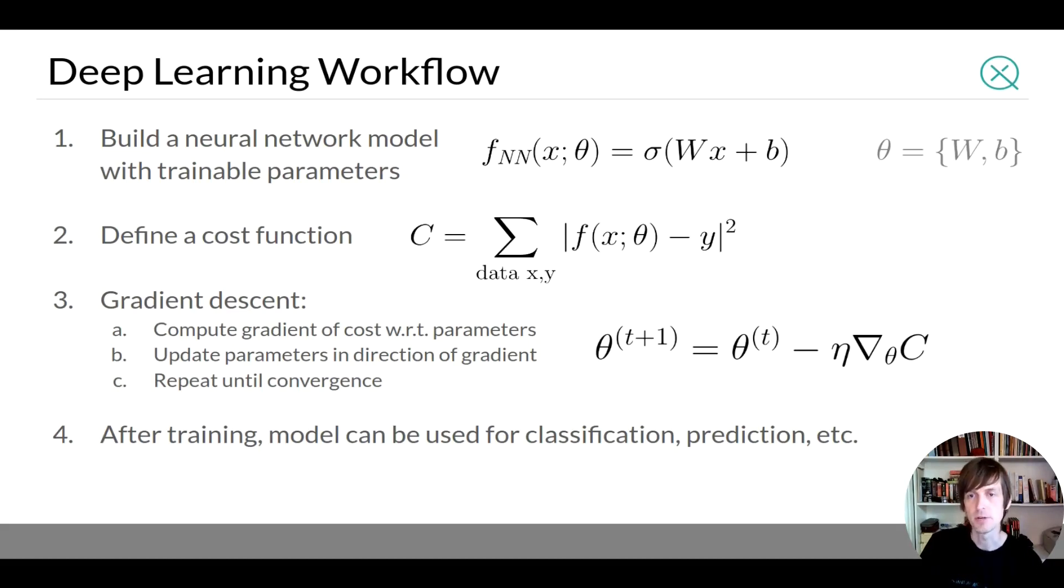Now in order to train a deep learning model you have to define a cost function which is the single scalar value that you should be optimized. And typically you want the cost function to do something like compare the output of your model function when given an input with the expected answer. And you want that to be close so you want to minimize the difference between those two things. But there's many different types of cost functions but that's the basic idea.